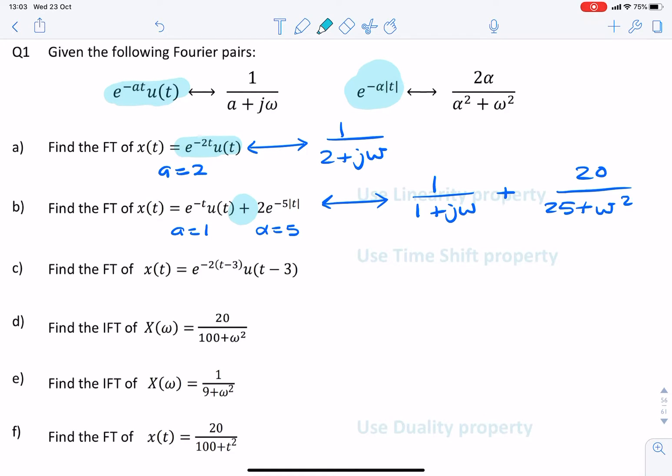The next one, this looks very similar to the question we had in part a, except we have a time shift, shift by 3 seconds. So the Fourier transform would be exactly the same as that from part a.